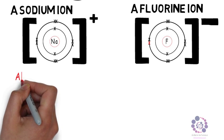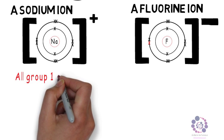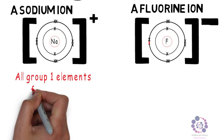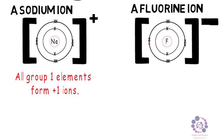All group 1 elements therefore form plus 1 ions, whereas all group 7 elements form 1 minus ions.